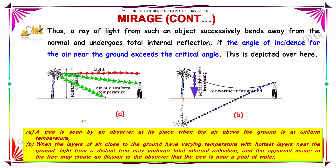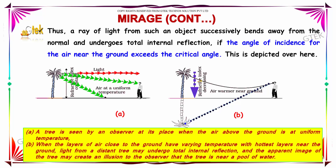Here is an explanation of cases A and B. A tree is seen by an observer at its actual place when the air above the ground is at uniform temperature. When the layers of air close to the ground have varying temperature with the hottest layers near the ground, light from a distant tree may undergo total internal reflection, and the apparent image of the tree may create an illusion to the observer that the tree is near a pool.